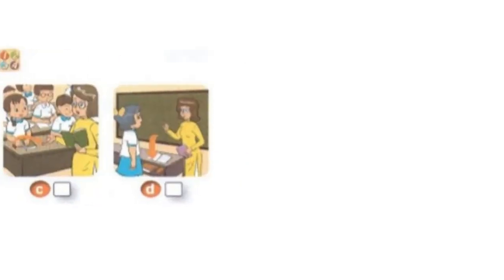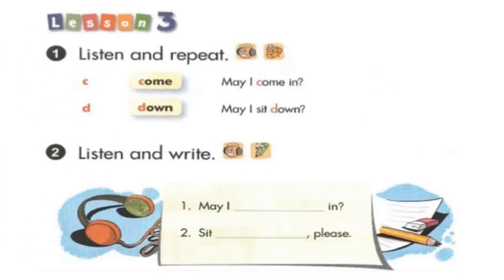Page 44. Lesson 3. Activity 1. Listen and repeat. K. Come. May I come in? D. Down. May I sit down?